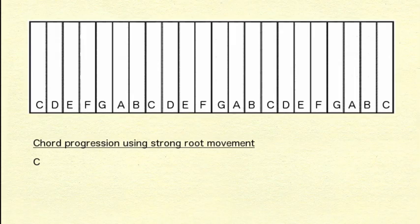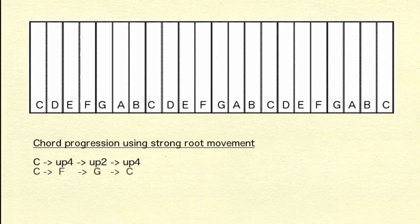Let's follow it with this sequence of strong root movements. Up a fourth, then up a second, then up another fourth. We look at the keyboard to see where our root will move. From C, up a fourth is F. From F, up a second is G. From G, up a fourth is C.